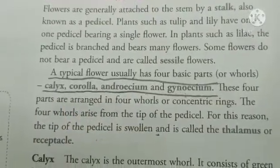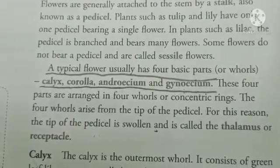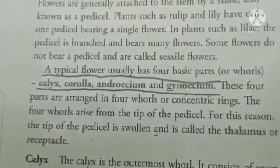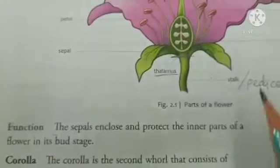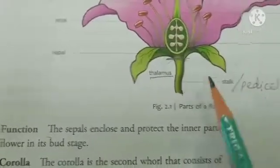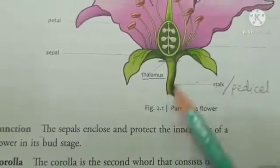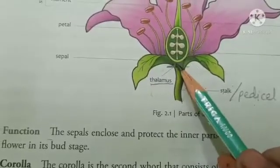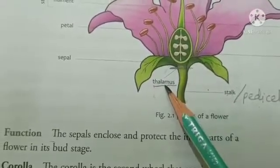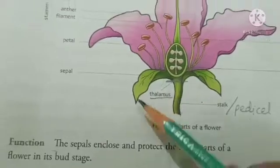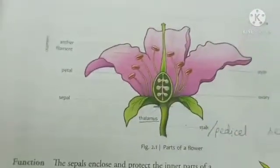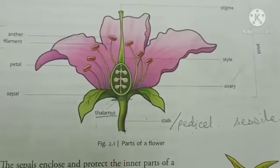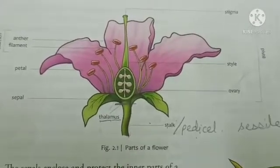All these whorls are arranged in concentric rings, that means one ring after the other. All these four whorls arise from the tip of the pedicel, that means the stalk which is bearing the flower. This tip of the pedicel is swollen and is known as the thalamus, and from the thalamus all the four whorls of the flower arise. This thalamus is also known as the receptacle.